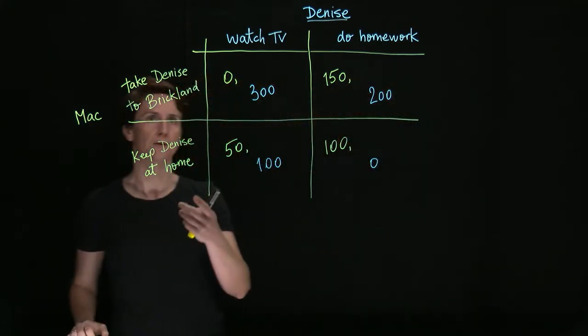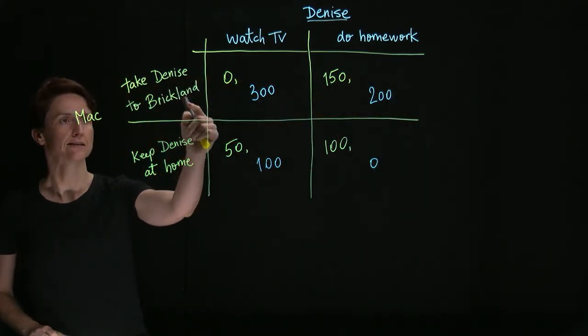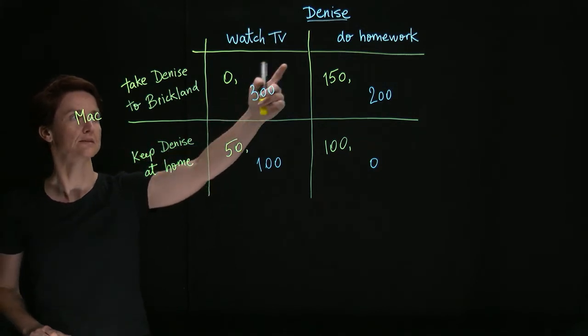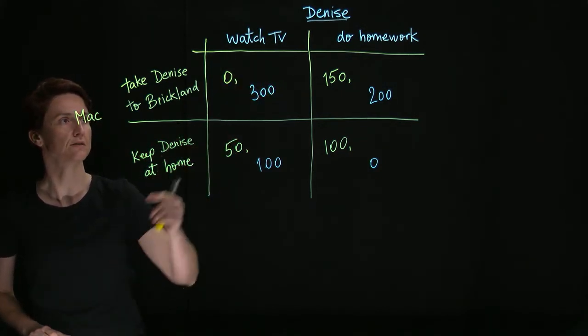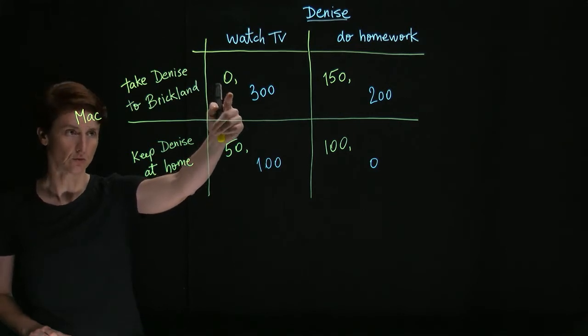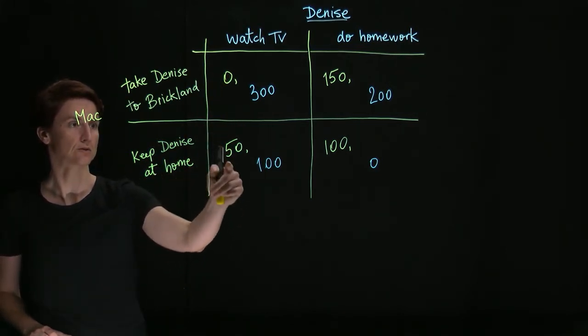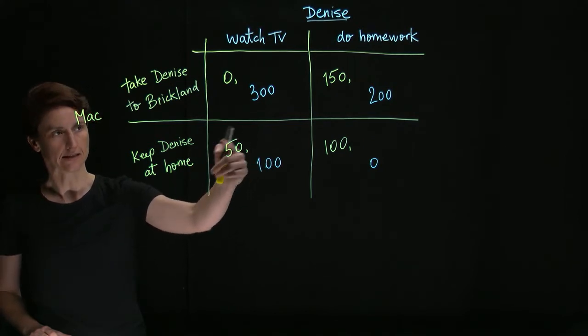So the payoffs are as follows. If Mac takes Denise to the amusement park, but instead of doing her homework, she watches TV, his payoff is lowest. If she keeps her at home and she watches TV, it's slightly higher payoff.